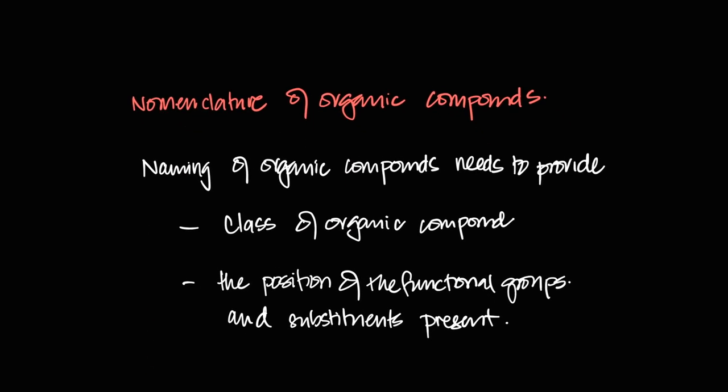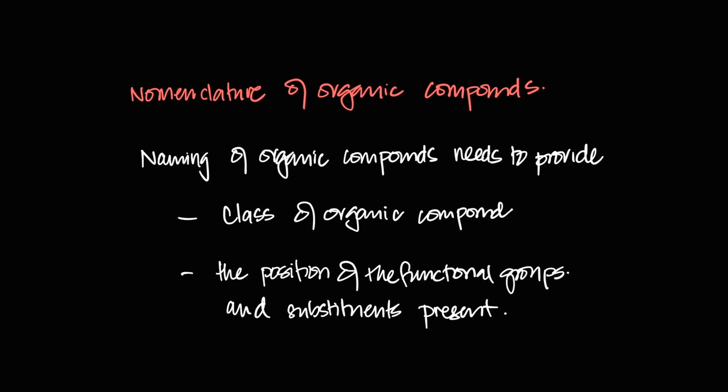This is the third video on organic chemistry, and this one is about naming of organic compounds, also known as the nomenclature of organic compounds. The naming system has to provide information like the functional group or class of the organic compound, the number of functional group atoms, the number of substituents, and where exactly they are.